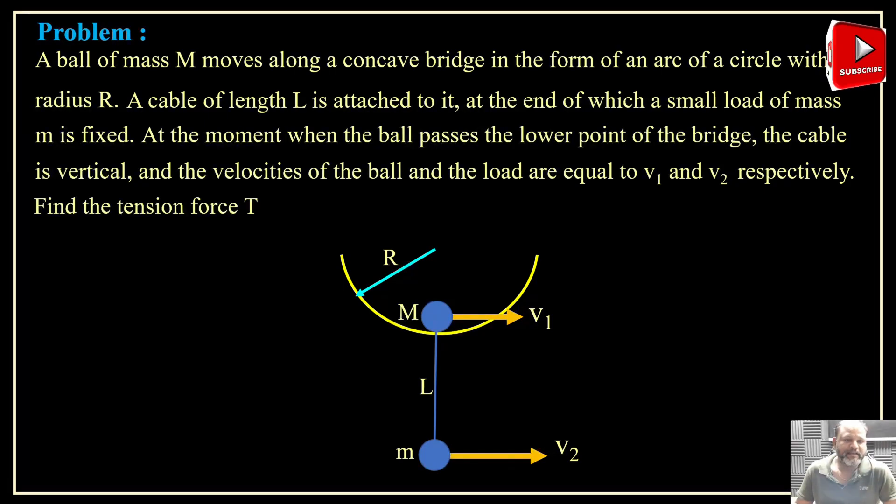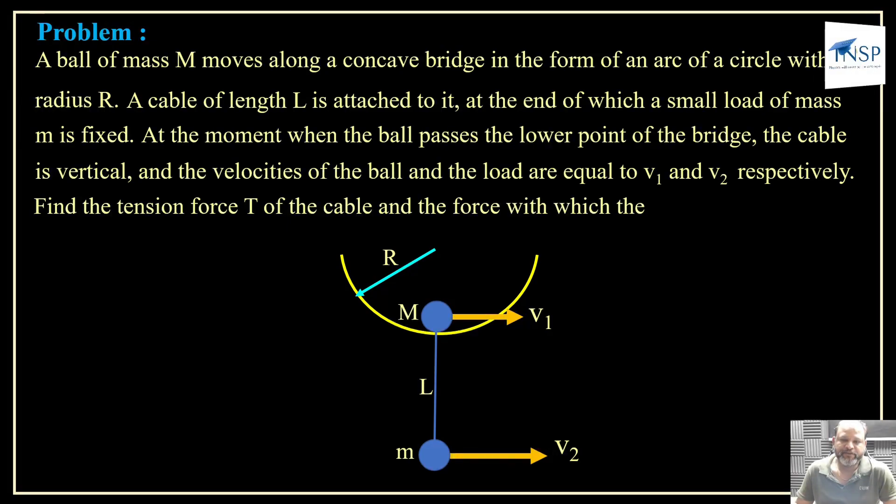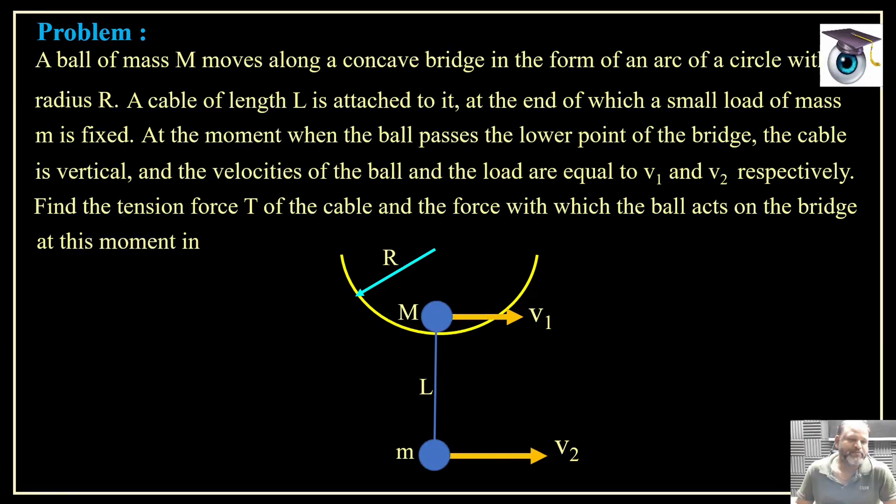And then finally we have to find the tension force T of the cable and the force with which the ball acts on the bridge at this moment. So we have to calculate the tension force on this cable and the force acting on the ball, that is the normal reaction between the bridge and the ball.